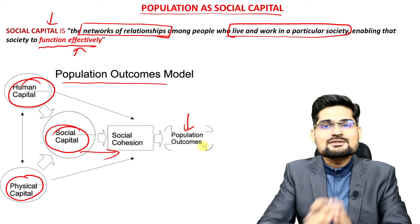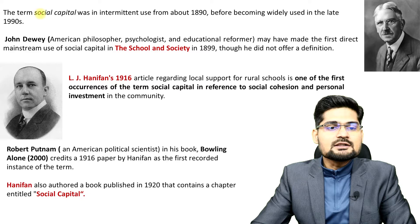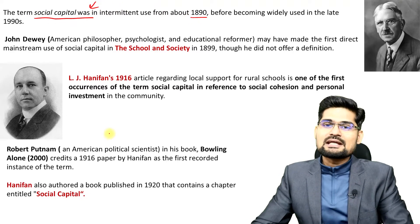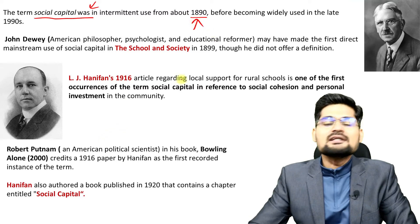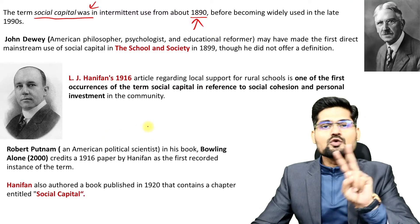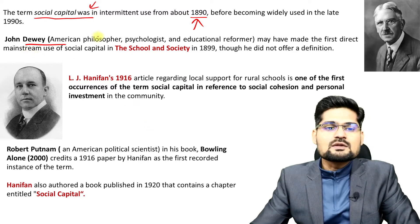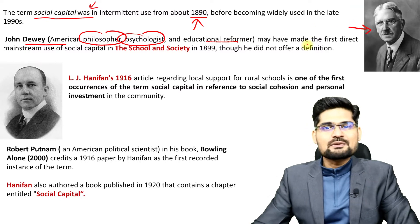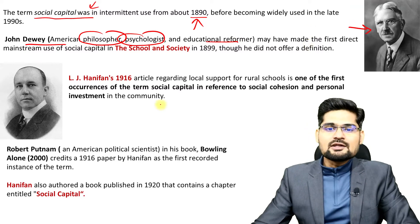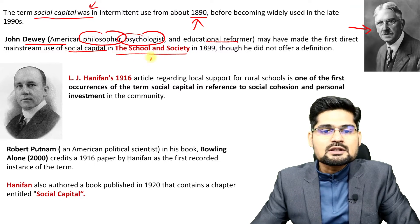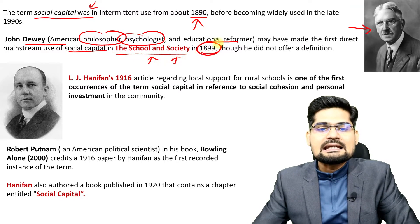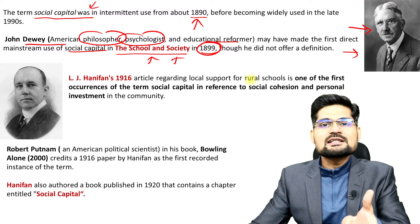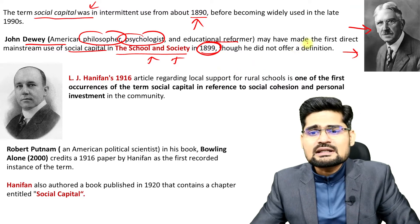How can population be understood as social capital? The term social capital was not commonly used before the 1890s. The end of the 19th century saw intermittent uses of this concept. Two people are very important here. John Dewey, who was an American philosopher, psychologist and educational reformer, gave this concept a new dimension and used the word social capital in his work 'The School and Society' in 1899. That's when this was popularized, but it was not clearly defined.